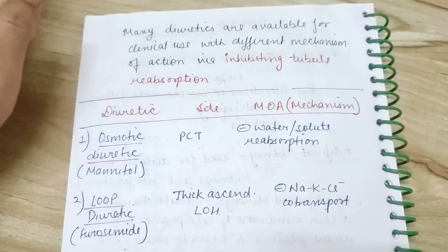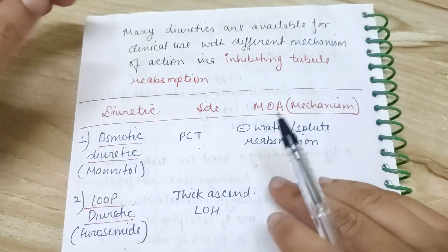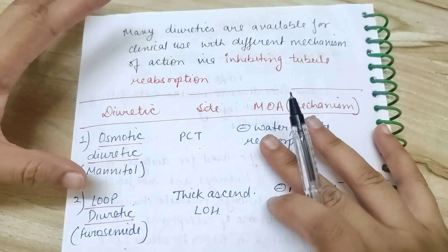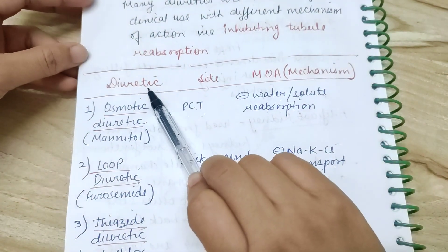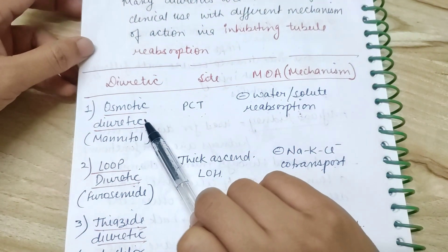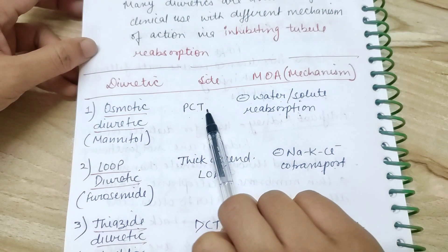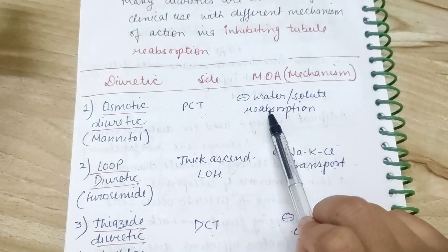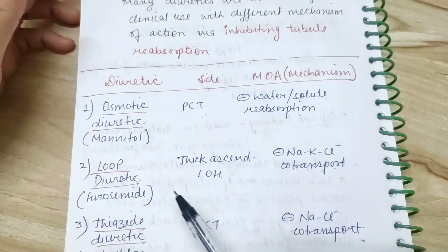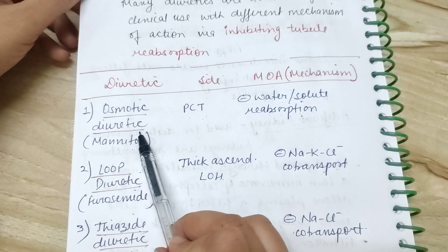Hi everyone, welcome to my channel. Today we'll be discussing diuretics. We should know the name of the diuretic, the category, examples in each category, the site where the diuretic is acting, and the mechanism of action. Let's begin with the first diuretic: osmotic diuretic.